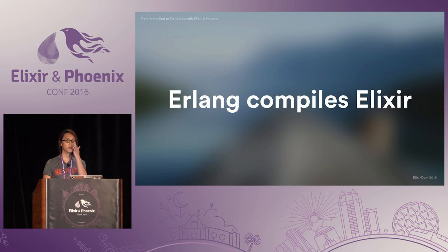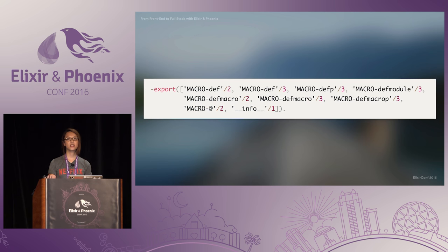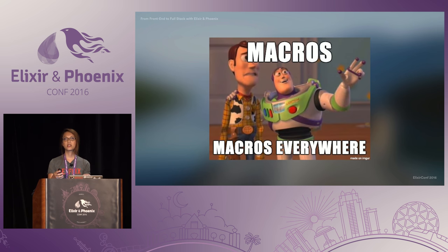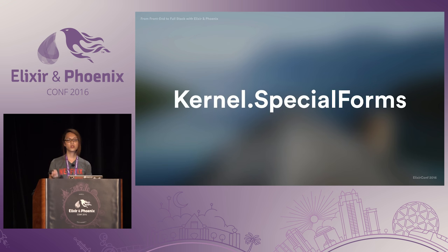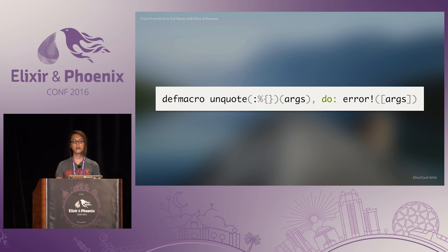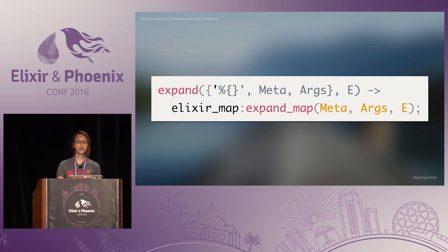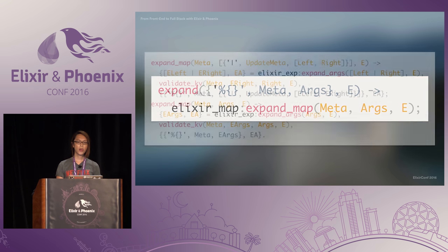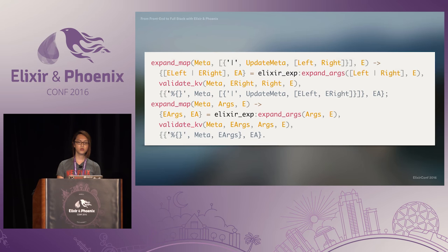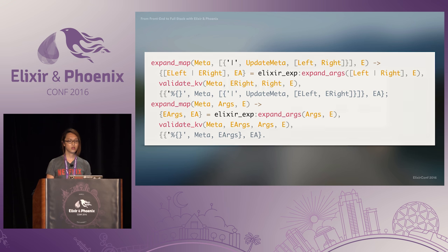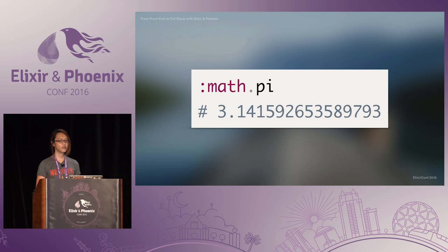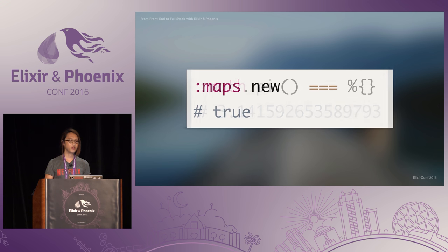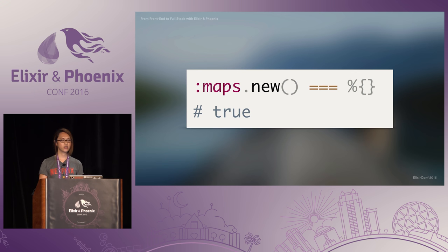There's a module known as kernel_special_forms, which defines the basic building blocks like map and list literals and protects them from being overwritten by other macros. The Erlang compiler takes our Elixir code and calls the relevant Erlang module — for example, a map literal gets passed through and the Erlang function matches the Elixir map syntax and eventually creates the map itself, while another function handles updating maps with the pipe syntax. You can call Erlang modules in Elixir using their atom names, and you can see that an Elixir map literal is equal to a new map created using Erlang's maps library. That's how you know Elixir maps are actually Erlang maps under the hood.